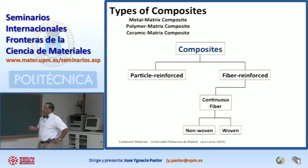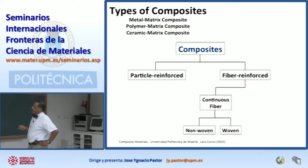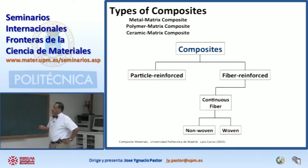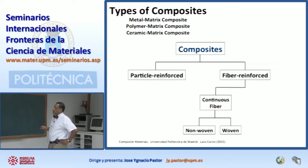Those are examples of particle reinforced composites. And then in the other branch, we have fiber reinforced composites. You could have continuous fibers, and those continuous fibers could be woven or non-woven.